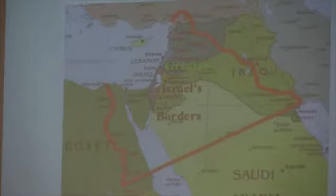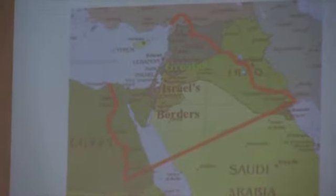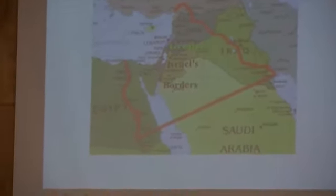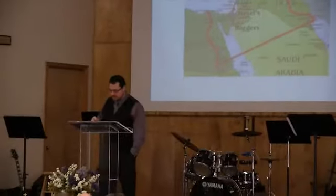Did they ever get it? No. They got this little piece right here. You notice the various nations on there and realize this is going to be a bloodbath to get all of this land — it's going to be a long, hard battle. That communicates a couple of different things: either God lied to Abraham, or he just isn't strong enough to keep his word, or he's not finished — he's not done with Israel.